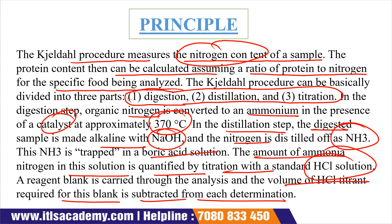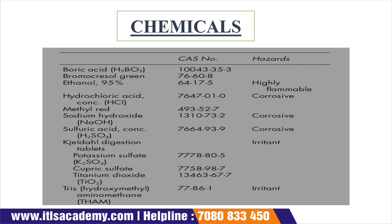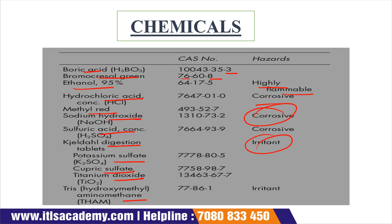The chemicals used in this experiment are: boric acid (CAS 10043-35-3), bromocresol green (CAS 76608), and ethanol 95% (CAS 64-17-5). These chemicals are highly flammable and corrosive. Additionally, hydrochloric acid in concentrated form, methyl red, sodium hydroxide, sulfuric acid, Kjeldahl digestion tablets containing potassium sulfate, cupric sulfate, and titanium dioxide are also used.